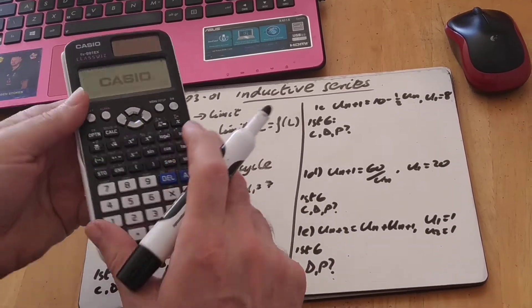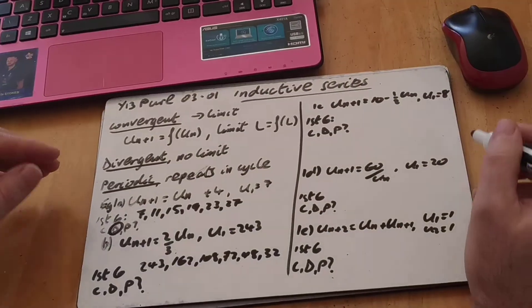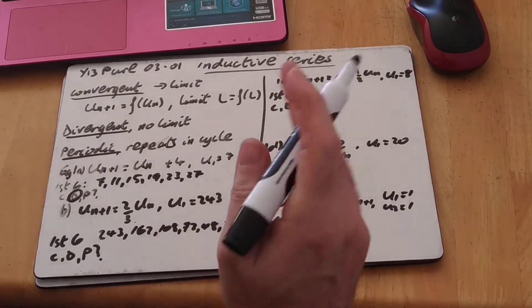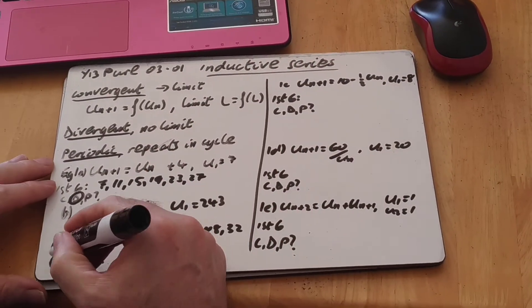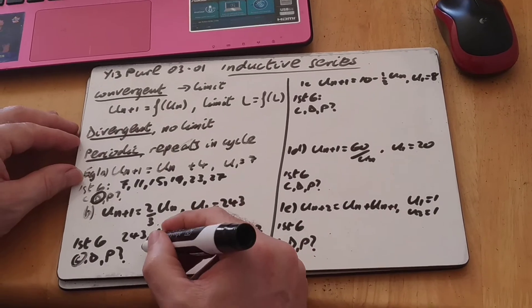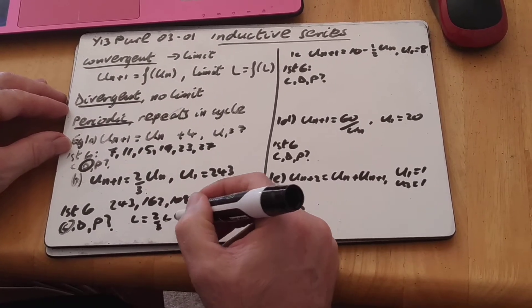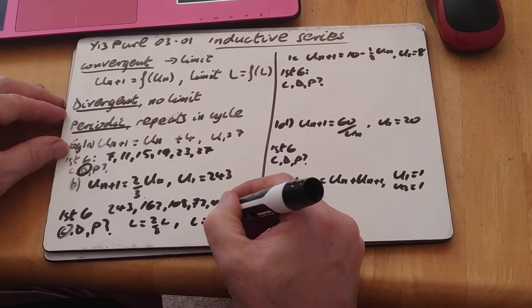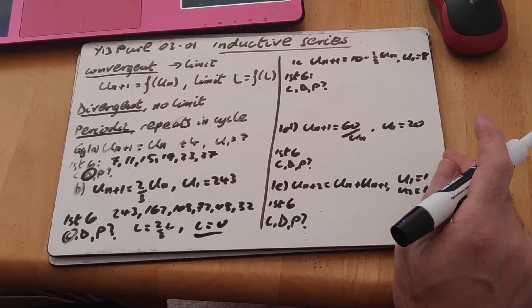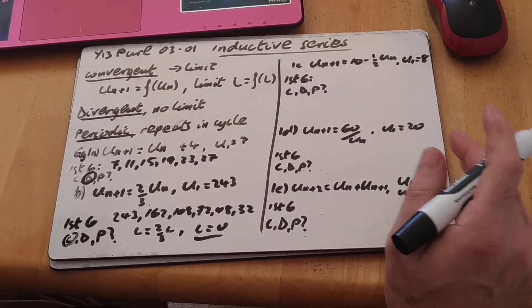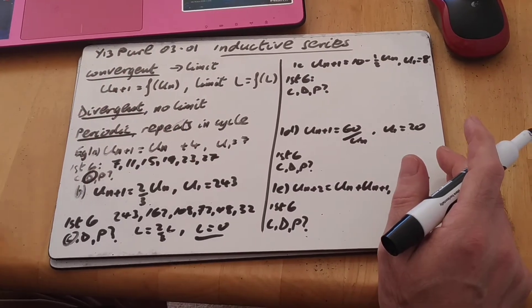And then it's asking whether it's convergent, divergent, or periodic. Well, this one, as you can see, it's getting smaller and smaller and smaller, it's convergent. And if we solve, l equals 2 thirds of l, the only way that works is if l is 0, so it tends towards 0. It will get smaller and smaller and smaller, but always positive, tends towards 0.